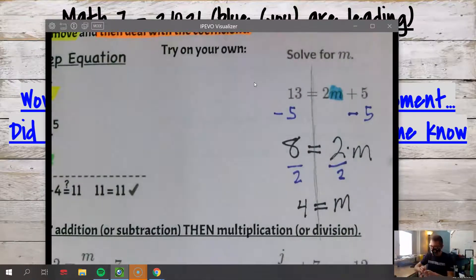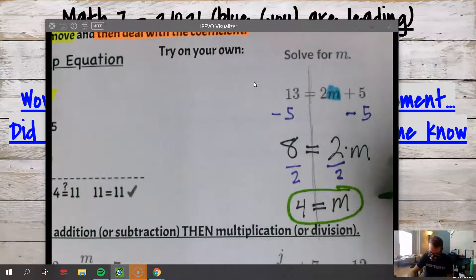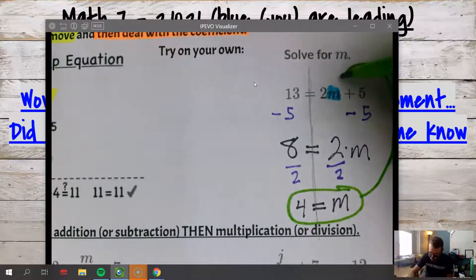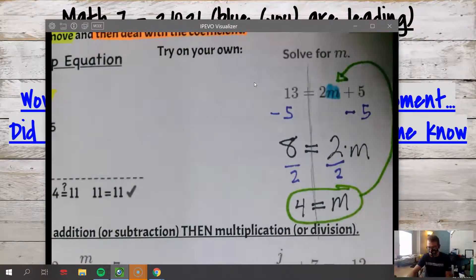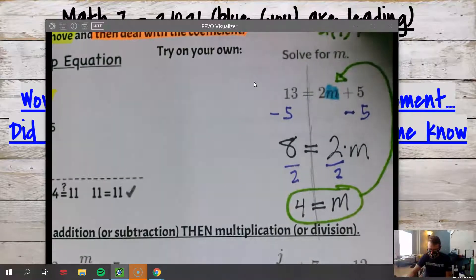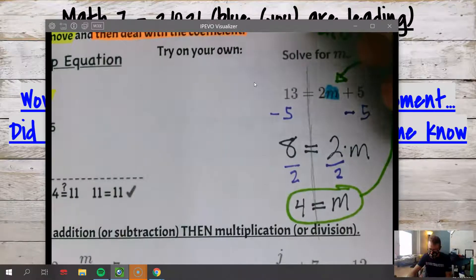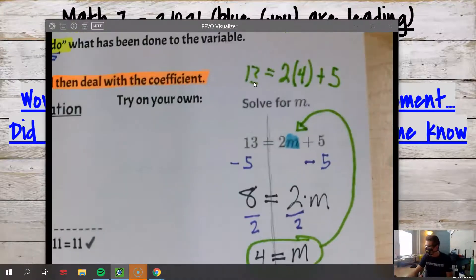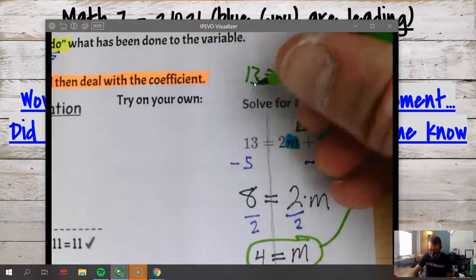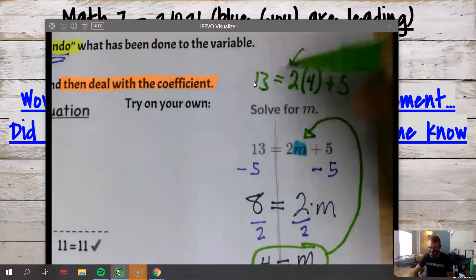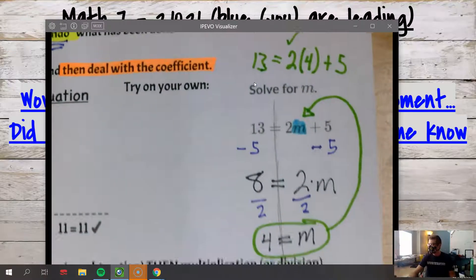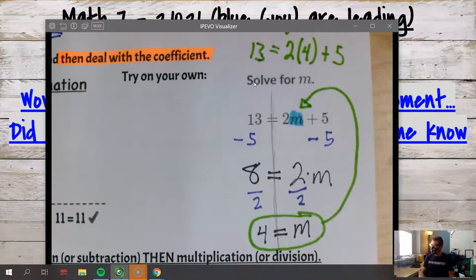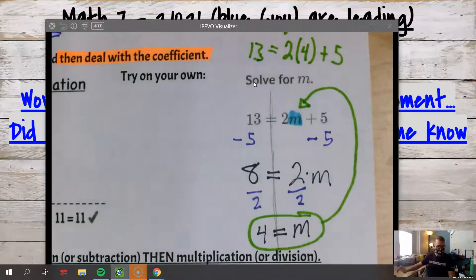Now we can check it by grabbing that value for the variable, plugging it back into the original, and saying 'Is this true?' 2 times 4 plus 5 - is that equal to 13? Yes. Yeah, so I kind of - you don't have to write this out - but I kind of do this math in my head and I check. If this is true, then we're good. We know that our answer is correct. Any questions on how we solved that?